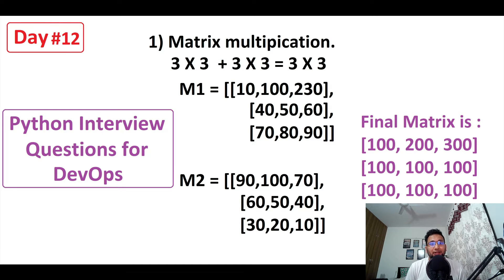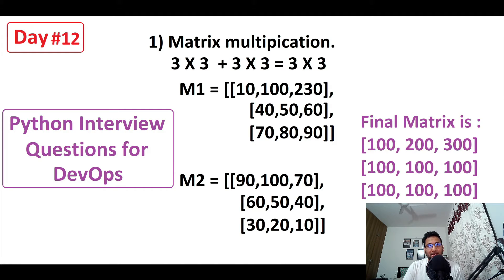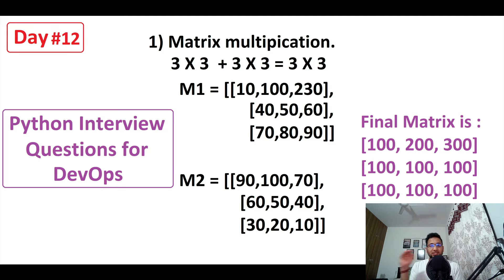Hey guys, my name is Ravish and welcome back to another video in the series of Python interview questions for DevOps. Today is day 12 and we are going to discuss a very interesting program which is matrix addition. Matrices are organized into rows and columns — anything going horizontally is rows and vertically is columns. Do not get confused: rows by columns.